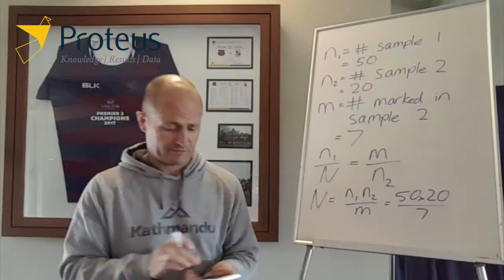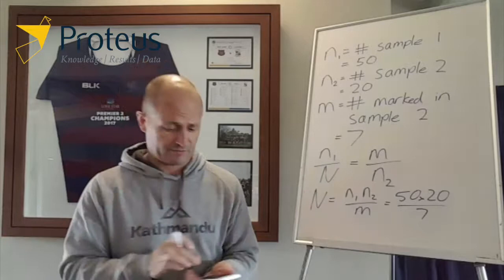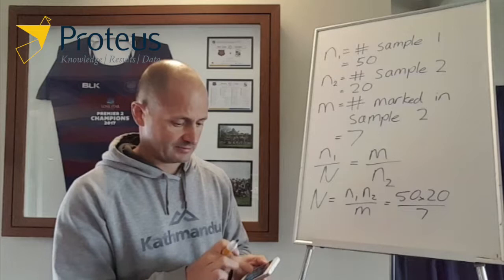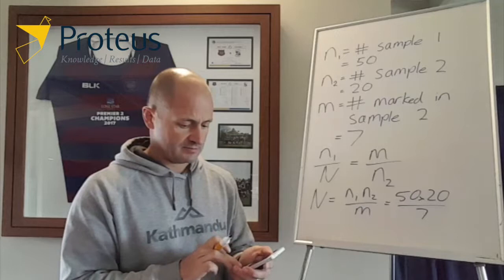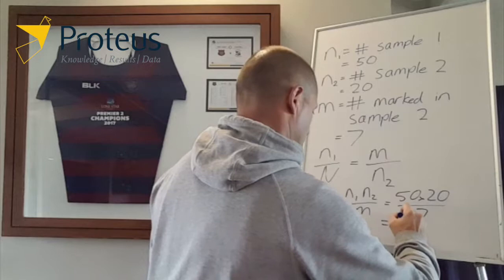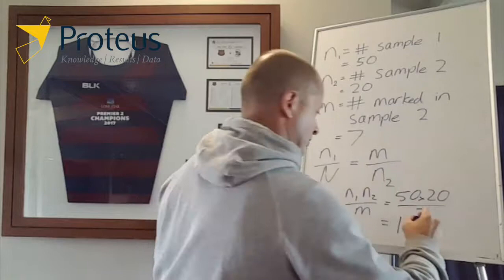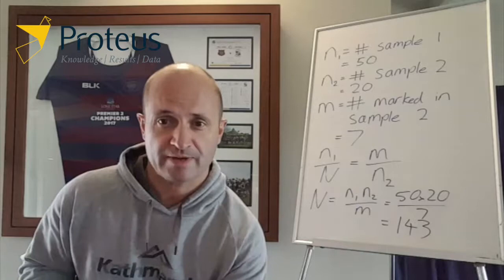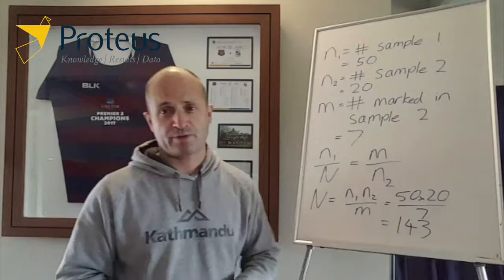So in this case that equals 50 times 20 divided by 7. I can't do that in my head — it's too early on a Sunday morning. So I'll get out the calculator. 50 times 20 is 1000, divided by 7 equals 142.85, so I'll round that up to 143. We've estimated that yesterday afternoon and evening, 143 bottles of beer were drunk, from this mark-recapture experiment.